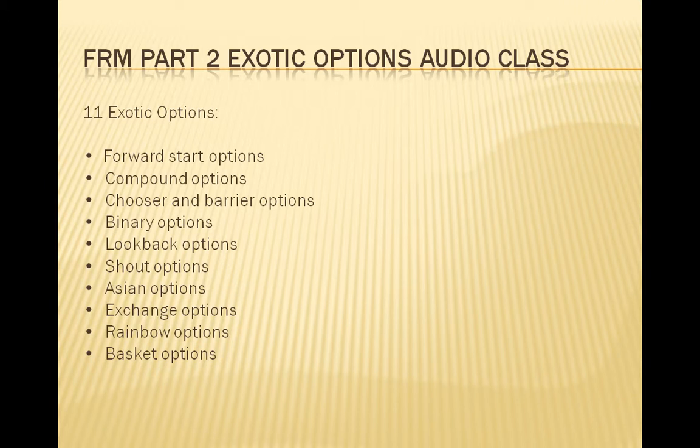A shout option allows the holder to pick a date to shout to the option seller, locking in the intrinsic value of the option at the time of the shout. At expiration, the owner receives the maximum of the shout intrinsic value or the expiration intrinsic value. If the stock price falls after the shout, the investor has locked in the difference between the stock price and the shout price. If the stock continues to rise, the shout option will have a payoff consistent with a standard call option. Most shout options allow for one shout during the option's life.